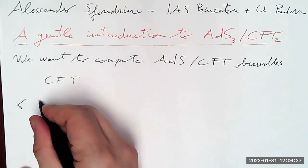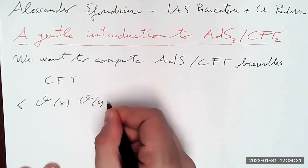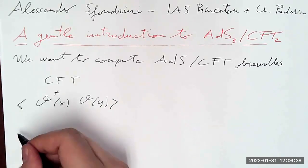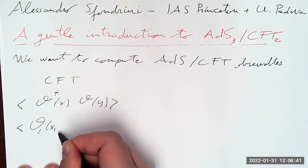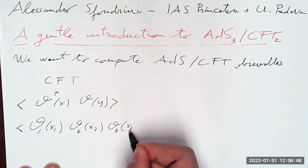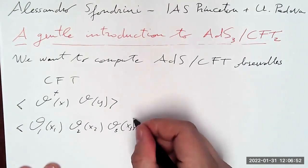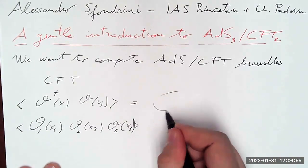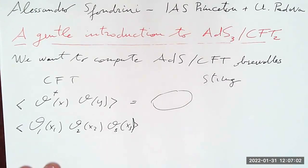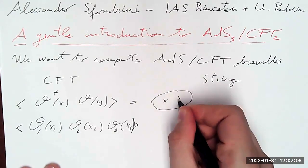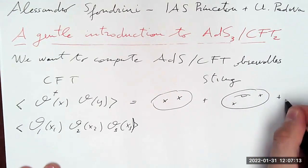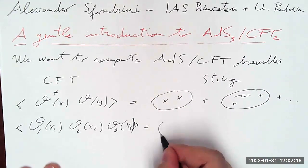There are several observables you can consider on the CFT side. For instance, you have correlation functions of local operators — a two-point function of O and O-dagger, and then you could have a three-point function, and so on. In string theory, we think of this as coming from a genus expansion, starting from the sphere topology with two insertions, then a one-loop correction, and similarly for the three-point function.